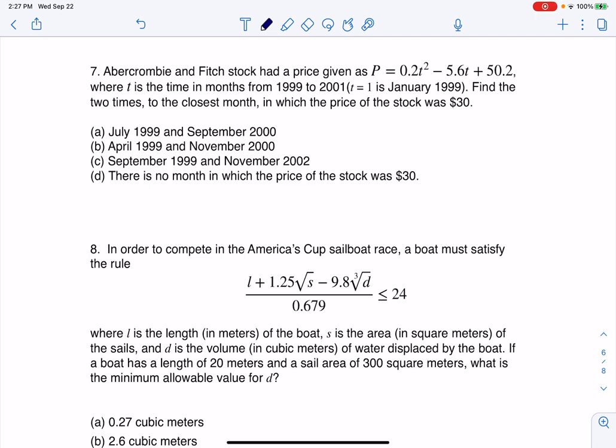Hey everyone, let's take a look at number 7. We have Abercrombie & Fitch stock with a price given by a quadratic function, where T is the time in months from 1999 to 2001. T equals 1 is January 1999. Find the two times to the closest month where the price of the stock was $30.